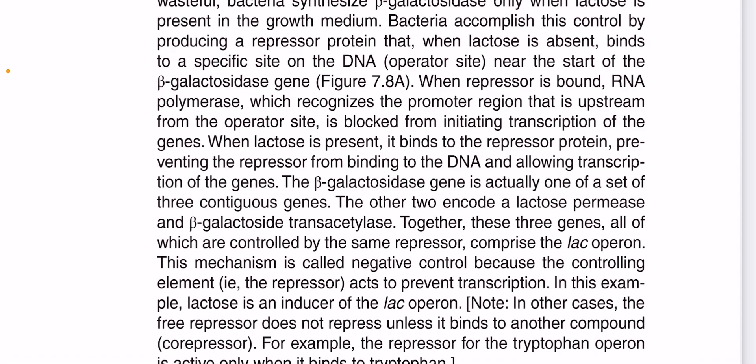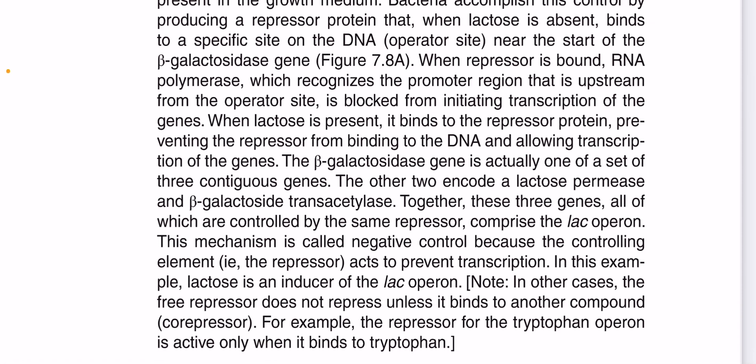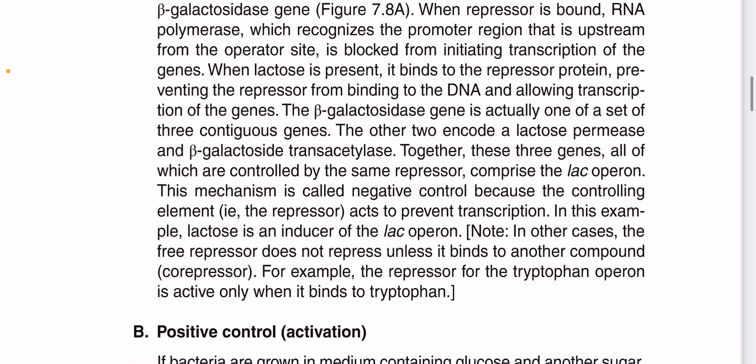The beta-galactosidase gene is actually one of three continuous genes in the lac operon. Together, this entire region and mechanism is called negative control.